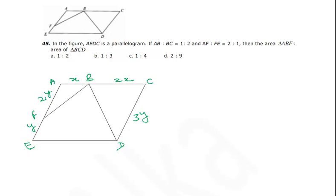Now the total length of AE is 3y, so CD will also be having the same length as 3y. We have to find out the ratio of area of triangle AFB and triangle BCD.